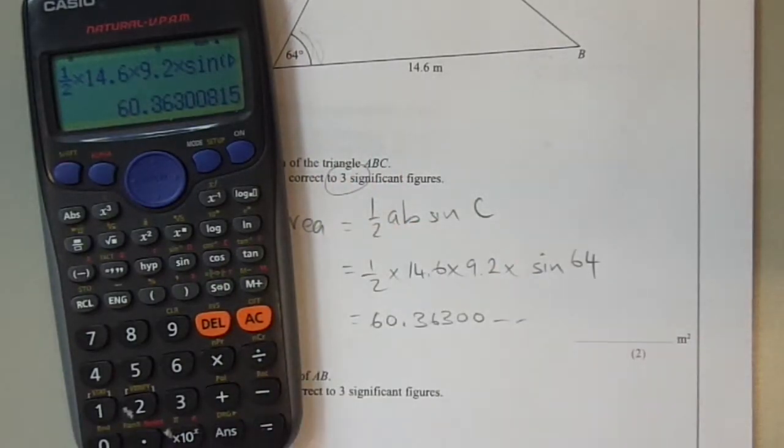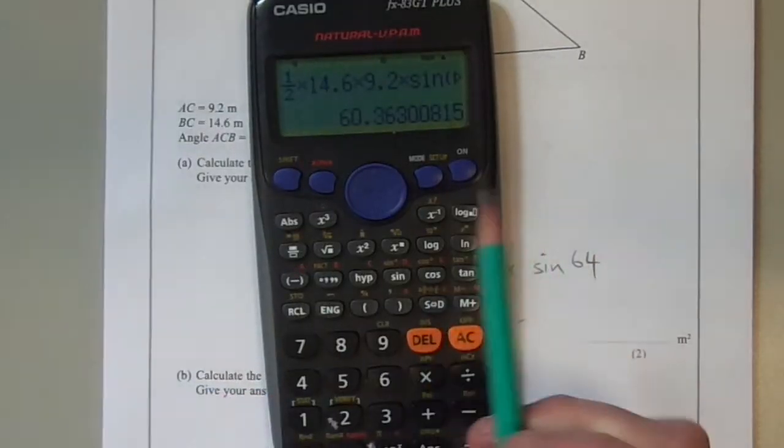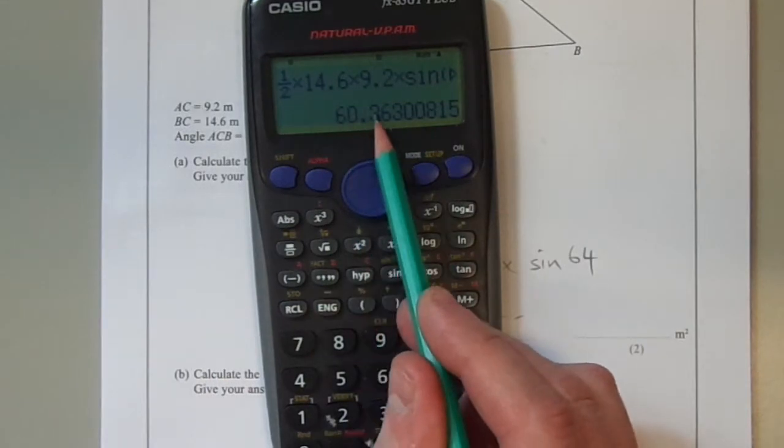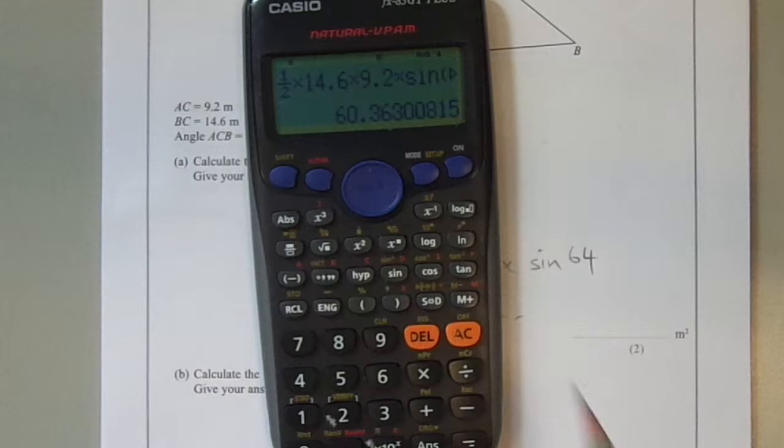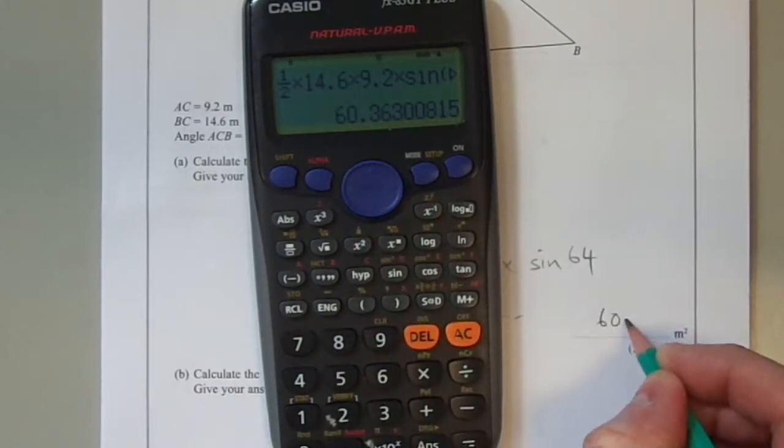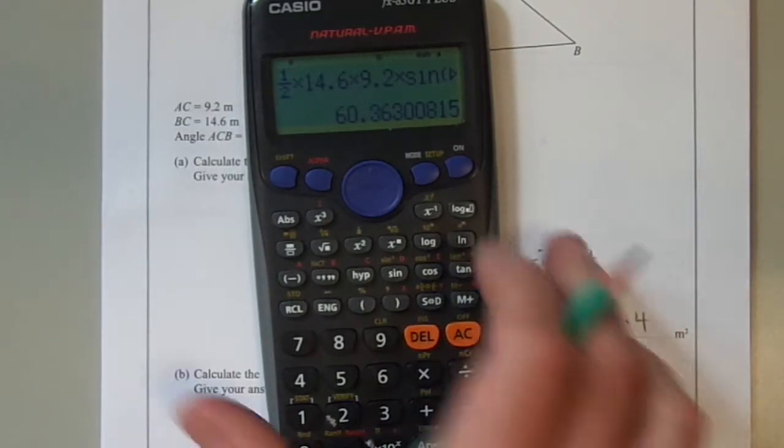Calculator displays 60.263000. Notice we're asked to round to three significant figures. Here's the first, second, and third significant figure. So we're rounding to the nearest first decimal place in this case. The value to the right is bigger than 5, so therefore the 3 goes up to 4. 60.4 metres squared.